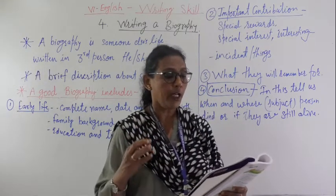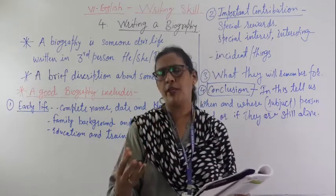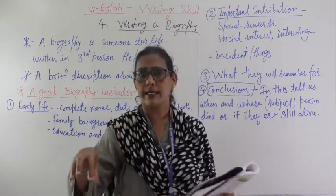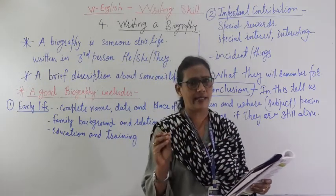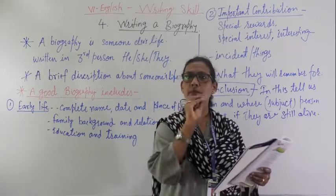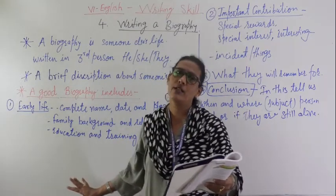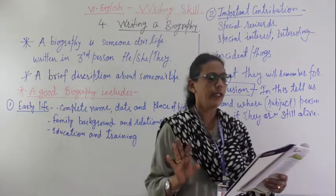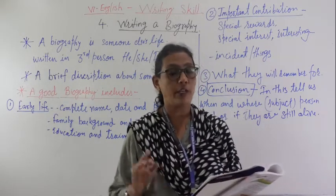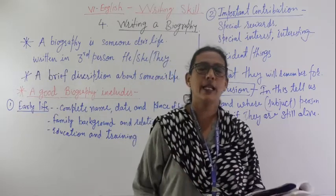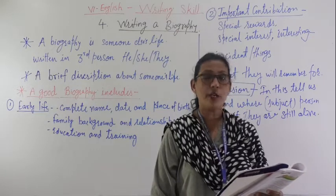By reading that, don't write as it is - you have to frame sentences and write the biography. The textbook says: write a biography of Rabindranath Tagore in about 200 words. The main points to be included: Name - Rabindranath Tagore. Family - Thakur family of Kolkata. Born on 9th May 1861.